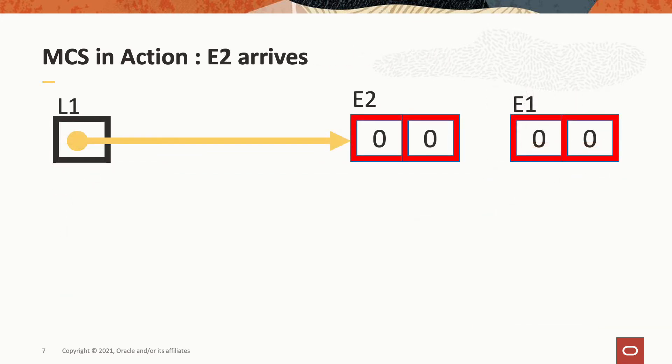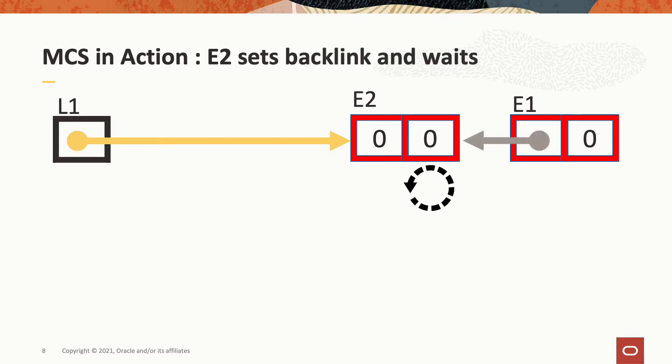Next, another thread arrives to acquire L1. That thread posts queue element E2 to the tail of the queue. In this case, the return address from the swap operation is E1 — that's non-null. Therefore, the thread knows it needs to wait. The thread that posted E2 then proceeds to set E1's backlink to point to E2, forming the queue, and also then starts to busy wait on the flag inside E2, the element that it posted.